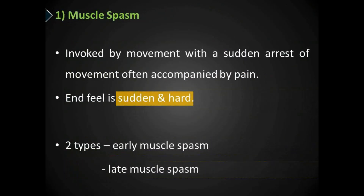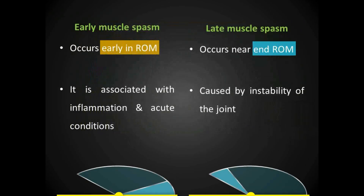These are the resistances offered to passive range of motion when there is muscle spasm. They will be sudden, probably accompanied with pain, and the end-feel will be hard and sudden. There are two types: early muscle spasm and late muscle spasm. The late muscle spasm gets more weightage, and the reason will be explained now.